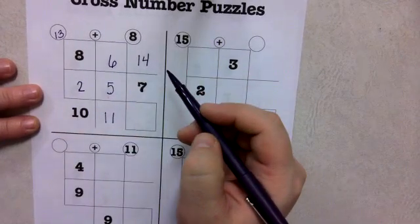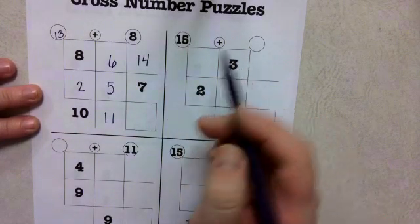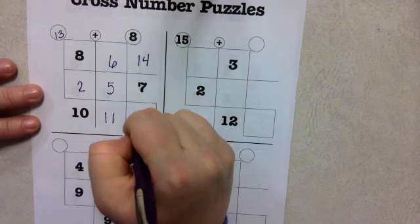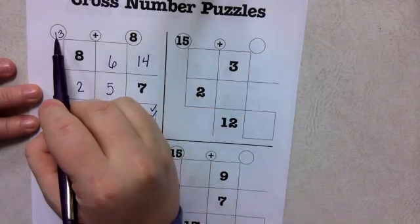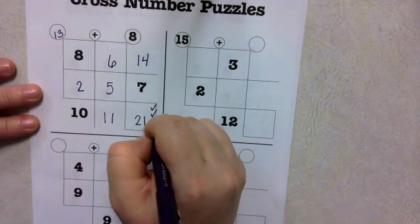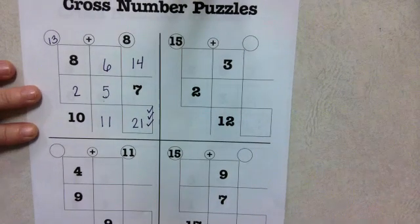So, now I've got all my numbers filled in, let's see if my answers are correct. 10 plus 11 is 21, 7 plus 14 is 21, and 13 plus 8 is 21, so I know I did that correctly.